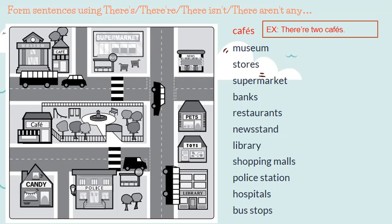Let's look at the map and see if you have cafes on the map. Do you see any cafes? Yes, there are two. So the first sentence in the example is: there are two cafes. Now I want you to do the same with all the other words — museum, stores, supermarket, banks, restaurants, newsstand, library, shopping malls, police station, hospitals, and bus stops. Let's pay attention to see if the sentence is in the plural or singular.